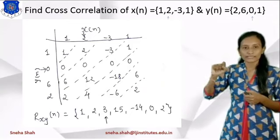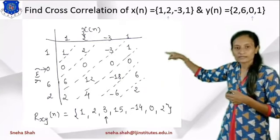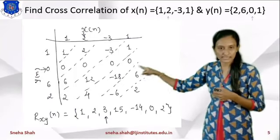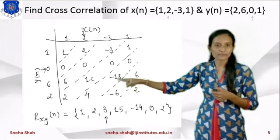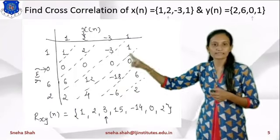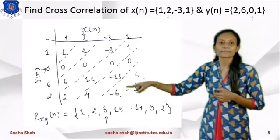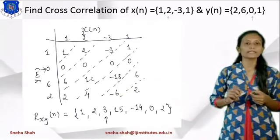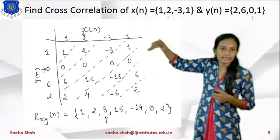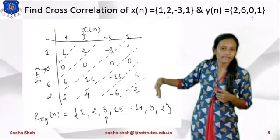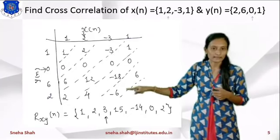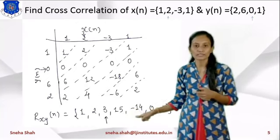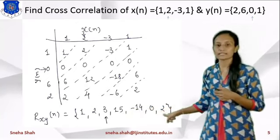Now we multiply all the terms. 1×1=1, 1×2=2, 1×(-1)=-1 (with 0 multiplying giving all zeros). Next, 6 multiplies: 6×2=12, 6×(-3)=-18, 6×1=6. Likewise I find all the remaining terms. After drawing the slant lines and adding, the answer is: {1, 2, 3, 15, -14, 0, 2}.